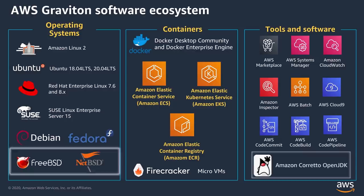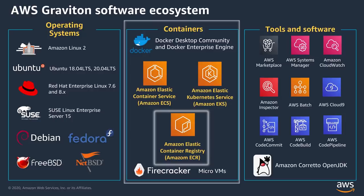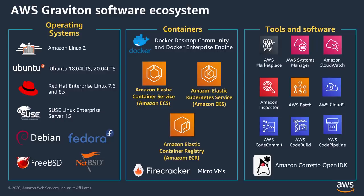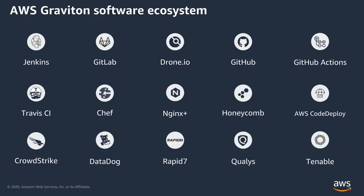We also have the open JDK supported by Amazon Corretto. In Container Services we have ECR, EKS, ECS, Docker, and Rancher. In Agents we have CloudWatch, AWS Systems Manager, Amazon Inspector, CrowdStrike, Datadog, HoneycombIO, Rapid7, and Tenable.